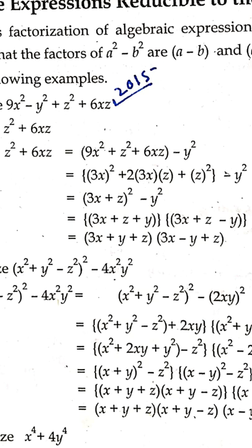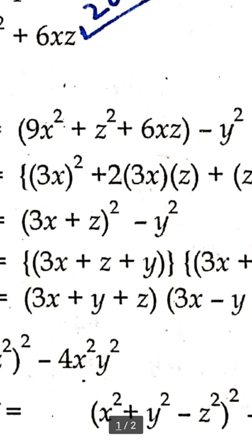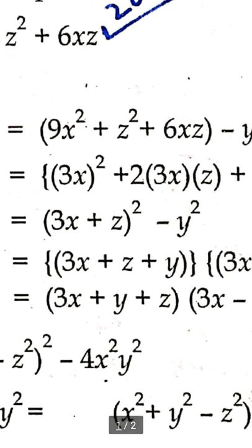We reduce the expression to the form (3x + z)² minus y², since a² plus 2ab plus b² equals (a + b)². This is how we reduce the expression: (3x + z)² minus y² is now in a² minus b² form, and the factors are (3x + z + y) and (3x + z minus y).